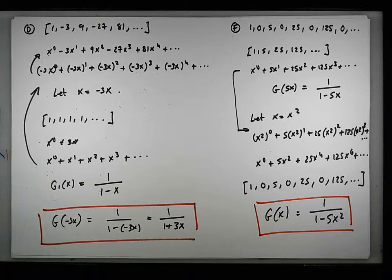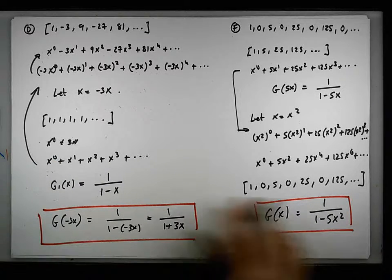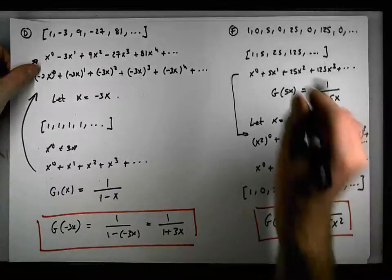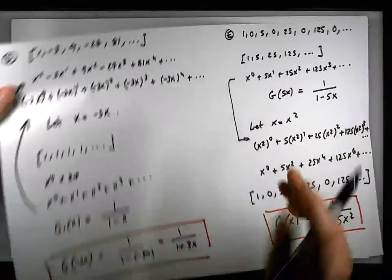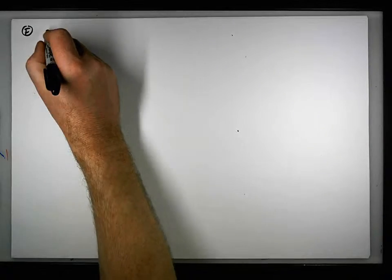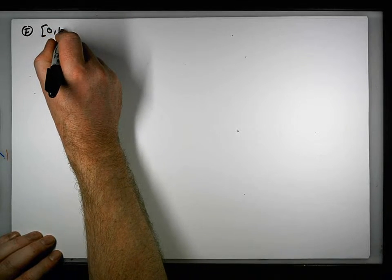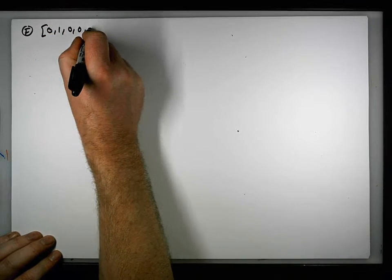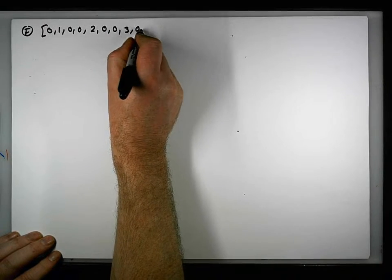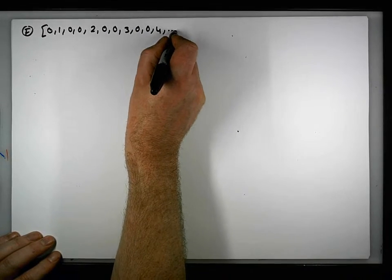The final sequence we are going to consider is sequence F, which is: 0, 1, 0, 0, 2, 0, 0, 3, 0, 0, 4, dot dot dot.